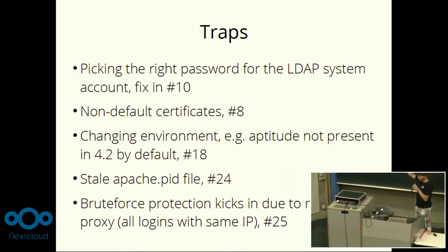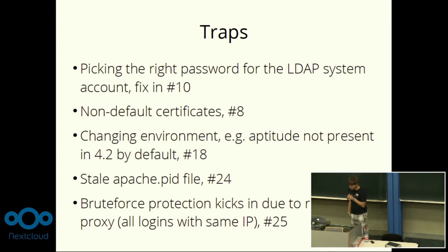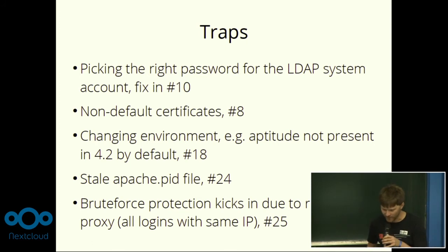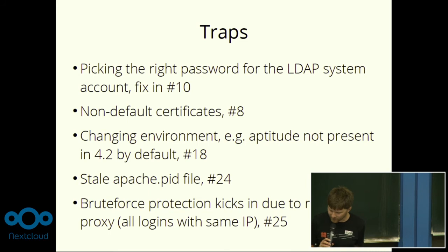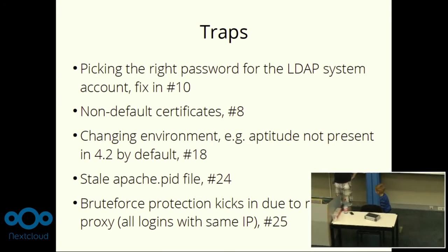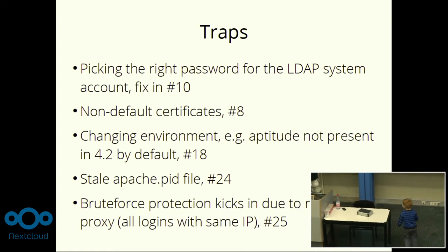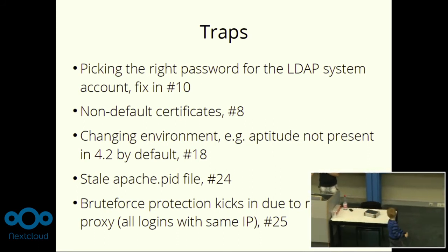Meanwhile it works with non-default certificates. With the next major release of UCS, aptitude was not auto-installed from the beginning, so this also needed to be adapted. We had some issues with a stale Apache PID file when the Docker container could not be started again — there also came help from the Univention people. And the last funny thing: we had brute force protection kick in because I missed configuring the proxy within the Nextcloud configuration, so all the logins came with the same IP address, but it was also seen and resolved.